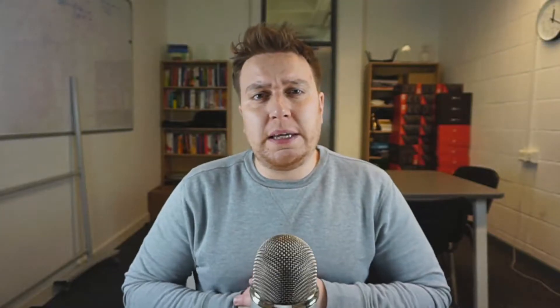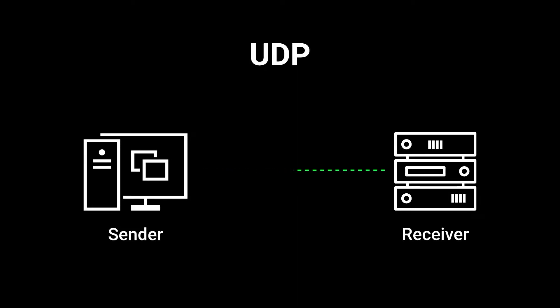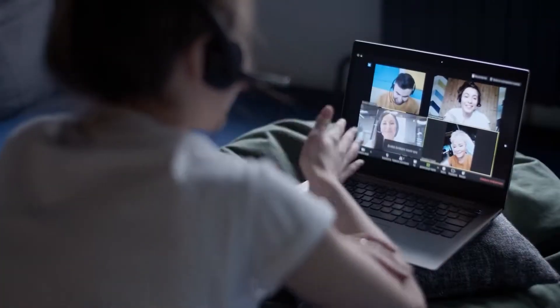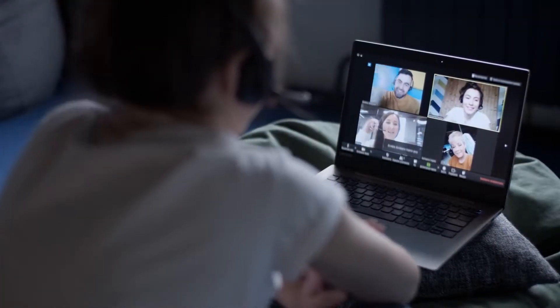UDP is the faster of the two shipping options, but it's less reliable. It doesn't check to see if the data it sent was received by the recipient — instead it just continues to send the data. The fact that it's faster than TCP makes it the ideal protocol for things happening quickly in real time: gaming, for example, or Zoom.